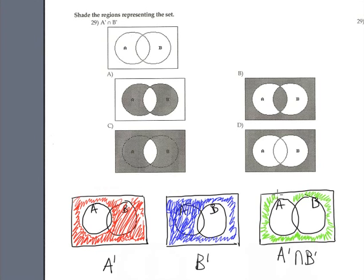The common part of A complement and B complement is outside A and outside B. This part is inside B — do not shade it. This part is inside A but outside B — do not shade it. The only part to shade is outside A and outside B. This corresponds with option D.